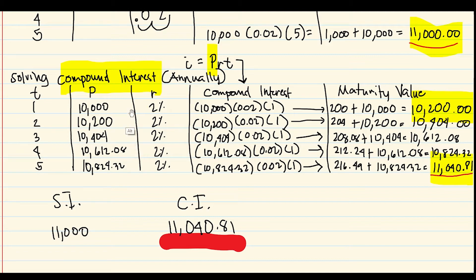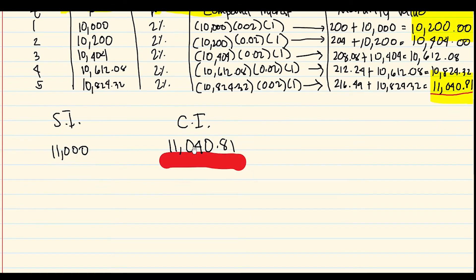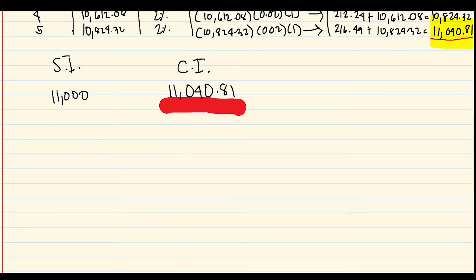This example used annual compounding. What about monthly? It works like simple interest but you re-deposit monthly, which would give even greater returns than annual compounding. That's the key point of compound interest.